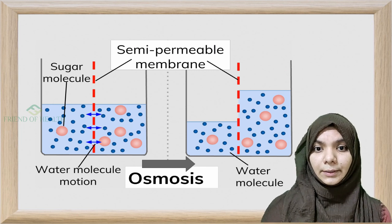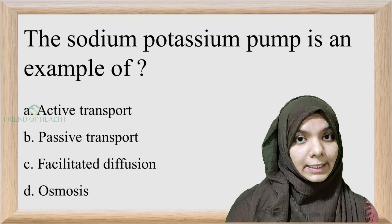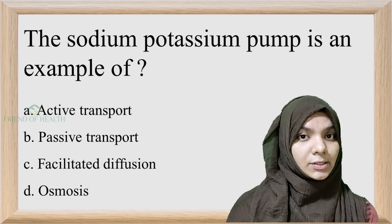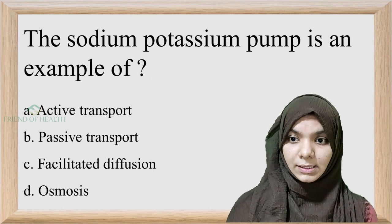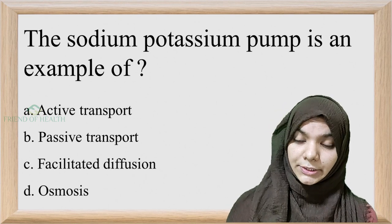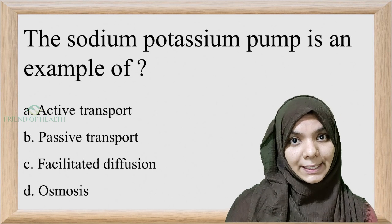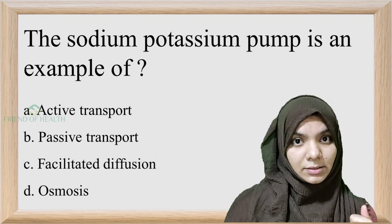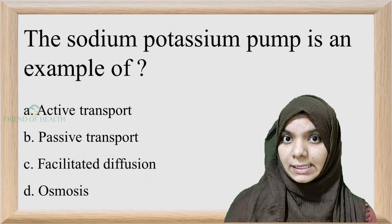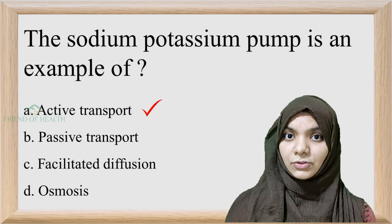Returning to the question: the sodium-potassium pump is an example of — A, active transport; B, passive transport; C, facilitated diffusion; D, osmosis. Facilitated diffusion involves large molecules like glucose with a carrier protein. Osmosis involves solvent movement through a semi-permeable membrane. Active transport requires ATP energy, and sodium and potassium ions are transported by active transport. Therefore, the answer is A — active transport.